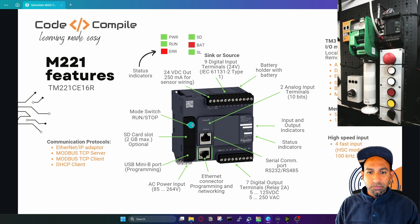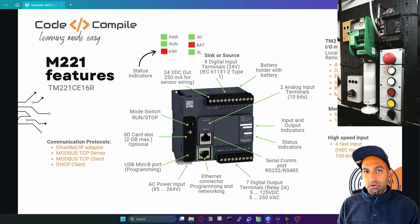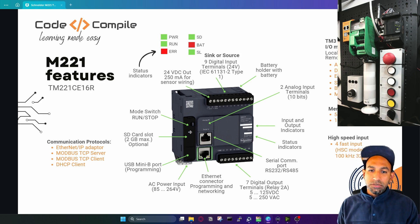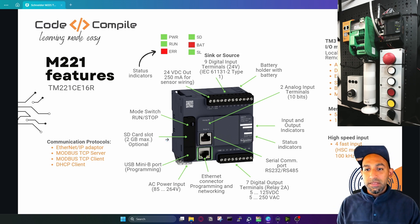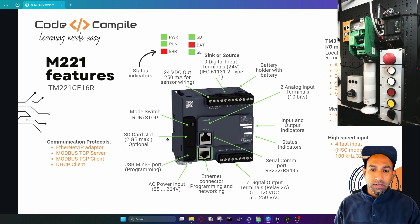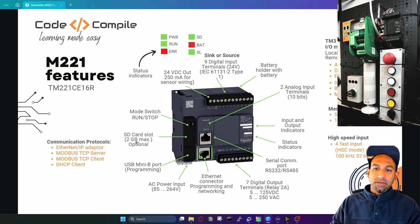On top you will see one switch — it's for run and stop mode selection. You can put the PLC in run mode or stop mode using the hardware switch. On the bottom there's also an SD card slot. If your program memory is large, you can use an SD card. This is also used to back up programs and load them onto another PLC.